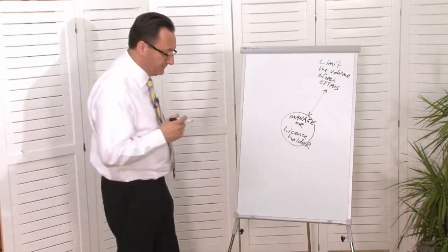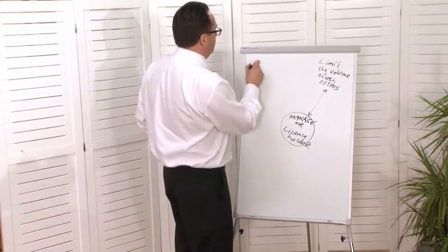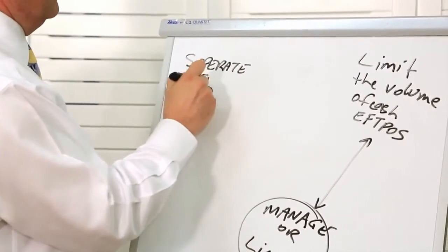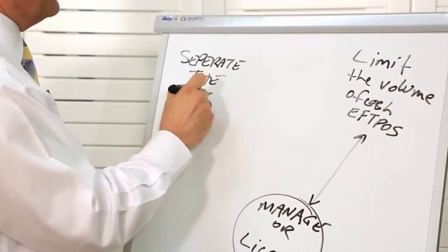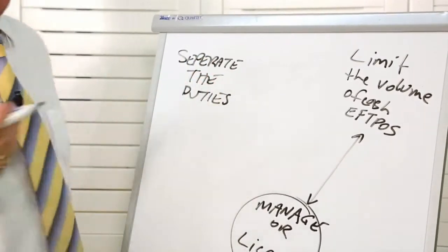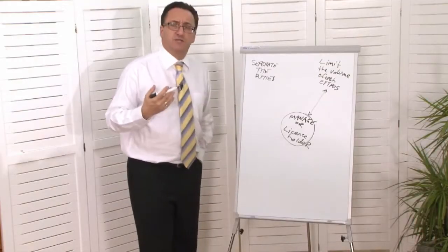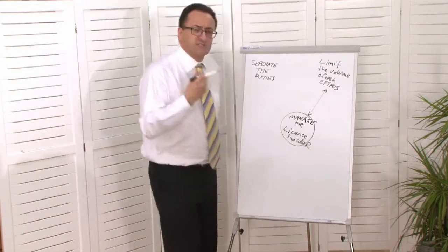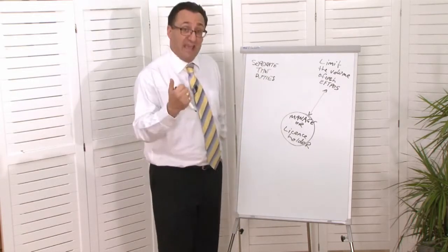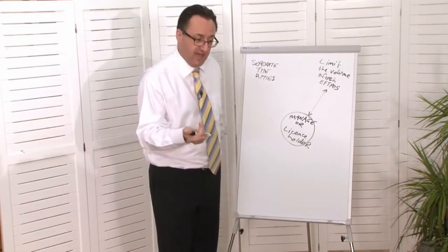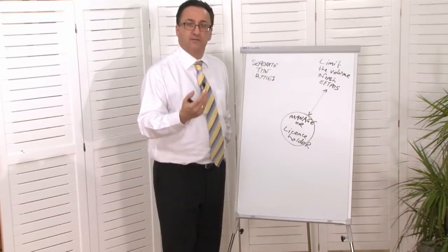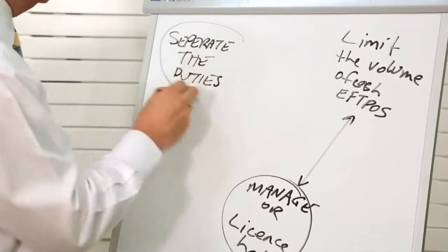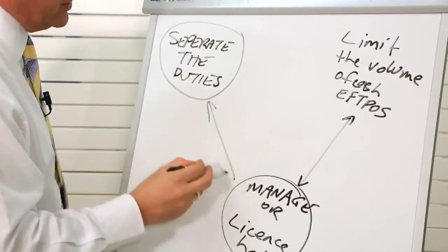The other thing that we can be doing is separate the duties. Now this may be difficult in smaller offices, but you need to consider these sort of things. For example, you shouldn't be having the same person counting cash, receipting cash, then banking the cash. So always consider that area as well.